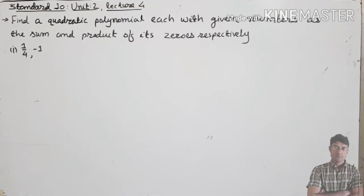Hello students, Standard 10, Unit 2, Lecture number 4. Here in this lecture we'll understand how to find a quadratic polynomial with the given numbers as the sum and product of zeros respectively. If we have a quadratic polynomial with the sum or product value, how do we find the polynomial?